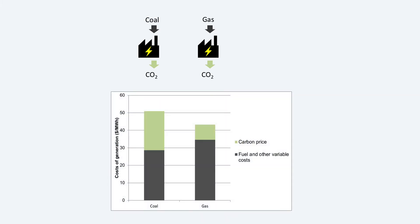So, if we put in a carbon price, both plants must pay a price for every tonne they emit. The increase in cost for the coal plant is much greater than for the gas plant because its emissions are so much greater. This is shown by the green bars on the chart. If it emits two and a half times as much, then the cost of the emissions will be two and a half times as great.